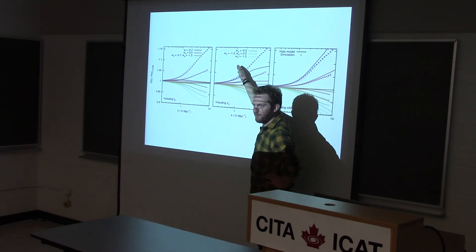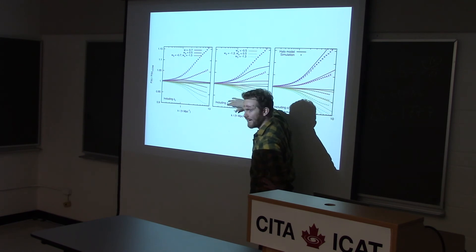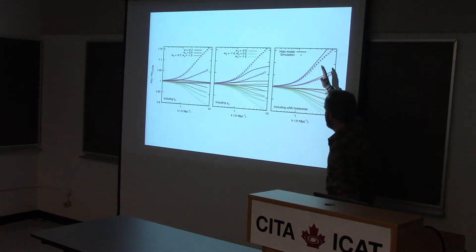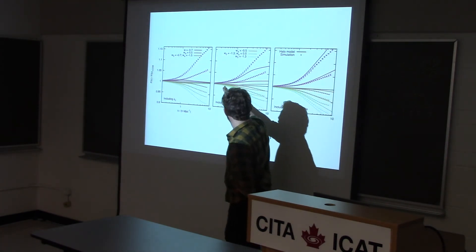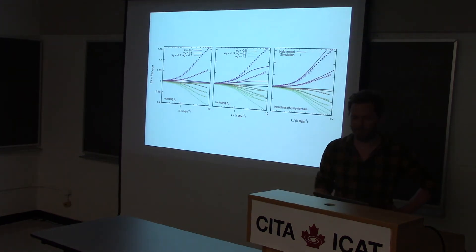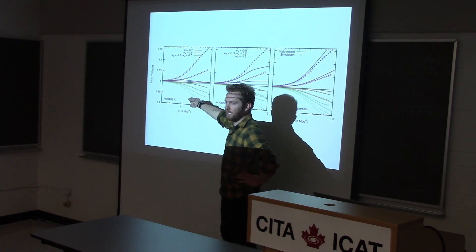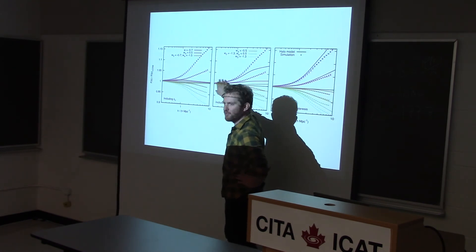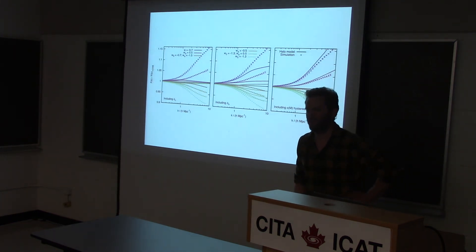I'll show you the effect of each ingredient: changing delta_C (fixing the concentration–mass relation and delta_V the same) has a very slight effect but gets you accuracy at the departure scale. Including delta_V dependence nails around K of 1. Then the concentration–mass hysteresis gets you further out to larger K. In order of importance, delta_C and delta_V are probably as important as each other, and the hysteresis is slightly less important. But if you don't include the delta_C change, it's quite wrong — so it does matter, which is kind of surprising.